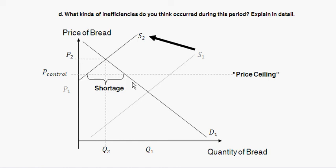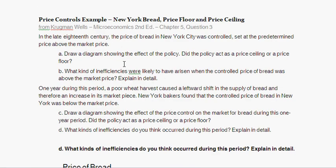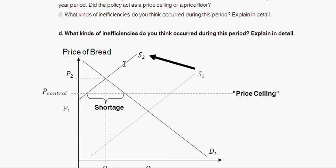Finally, the fifth inefficiency is again the black market. At this low controlled price, there are many demanders willing to pay more, creating an incentive for sellers to sell bread illegally at a higher price. Black markets come with potential negative side effects like increased criminal activity. That wraps up the price controls example for the New York bread problem — hopefully this was helpful, thanks and have a good day.